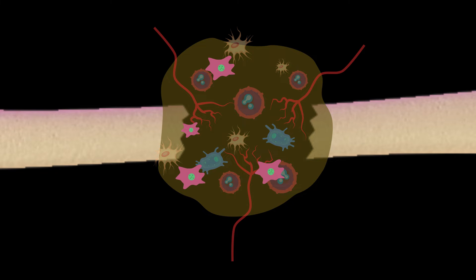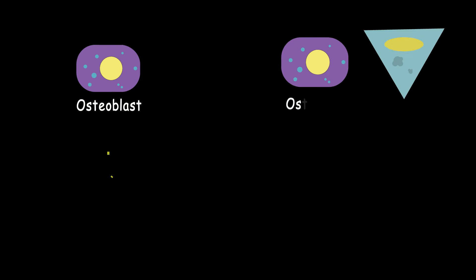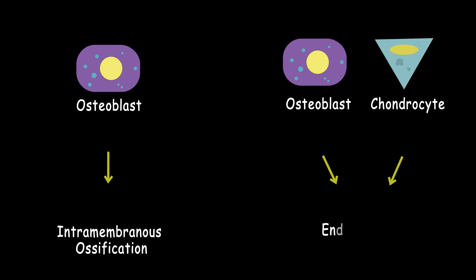Then mesenchymal stem cells migrate from the bone marrow, periosteum and endosteum to the site of injury and make new cells such as osteoblasts and chondrocytes which are responsible for making the bone tissue. These cells can make bone tissue in two different ways: intramembranous ossification and endochondral ossification.